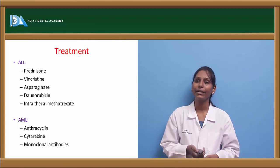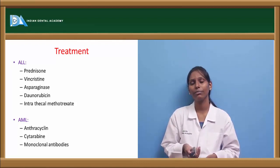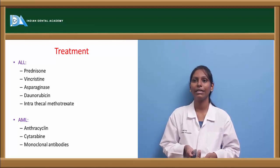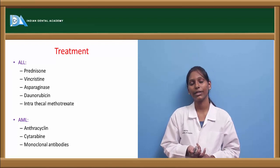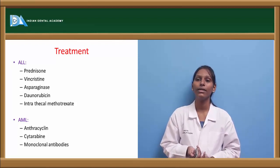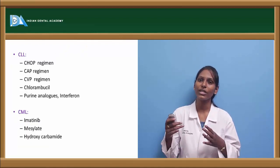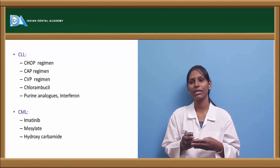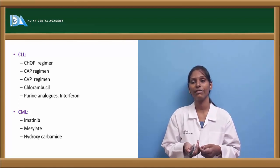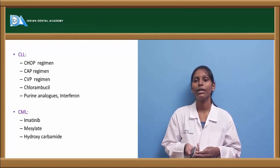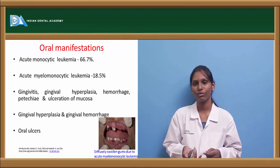Regarding treatment: for ALL, prednisone is the first line of treatment, along with vincristine, asparaginase, daunorubicin, and intrathecal methotrexate. For AML, anthracycline, cytarabine, and monoclonal antibodies can be given. For CLL, a combination drug regimen is used including chlorambucil, purine analogs, and interferon. For CML, imatinib mesylate and hydroxycarbamide are the drugs of choice.